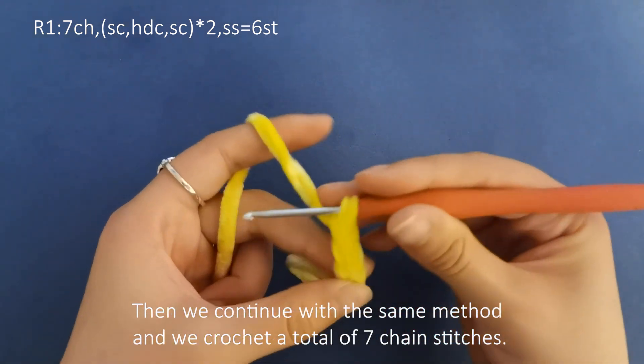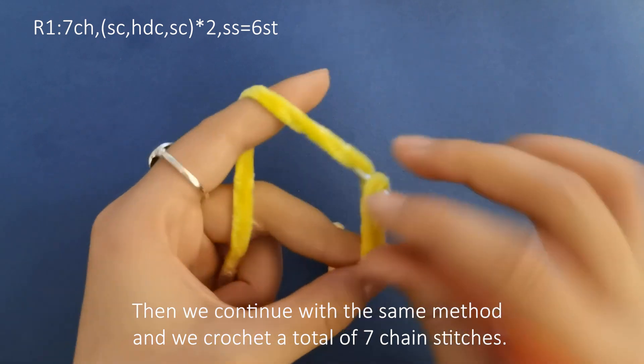Then we continue with the same method and we crochet a total of 7 chain stitches.